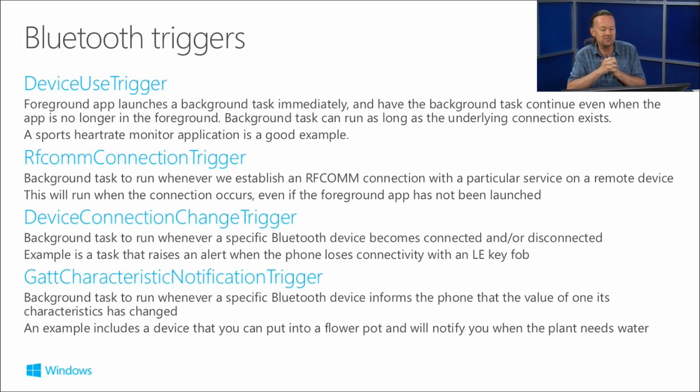And likewise, a GATT characteristic notification trigger. This is where you've got a Bluetooth LE connection, you're paired with a Bluetooth LE device, and you've sent a write characteristic to it saying: tell me when such and such a characteristic has changed. That health thermometer was a good example. When that characteristic changes, it will send a message and fire up the background task running on your phone to handle that message, and then your app can take action - put an alert up, update a tile, or whatever it needs to do.